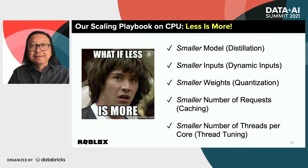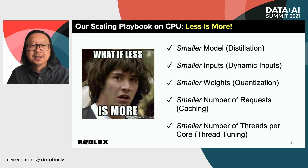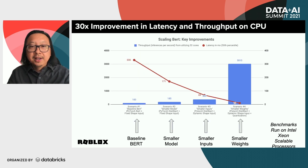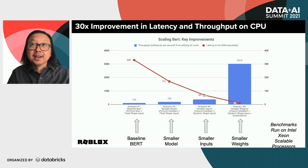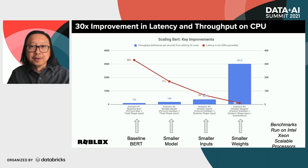So there you have it: five easy but critical optimizations for scaling BERT inferences on CPU. Putting it all together, we got at least a 30x improvement over the BERT baseline — what you can get out of the box. We say at least 30x because we're not including the caching gains either, which would put it well over 30x.